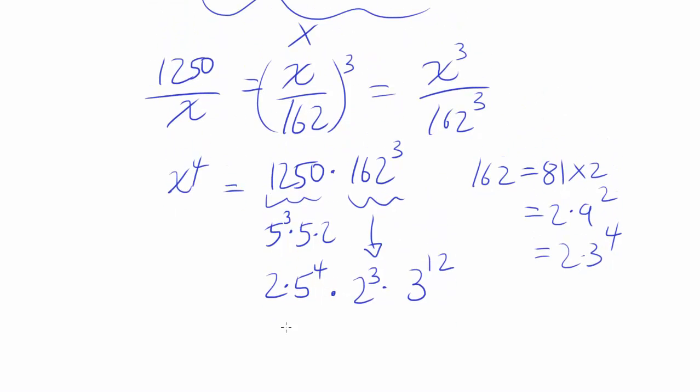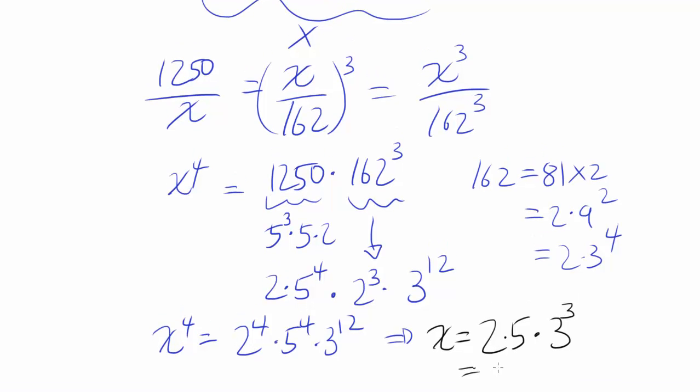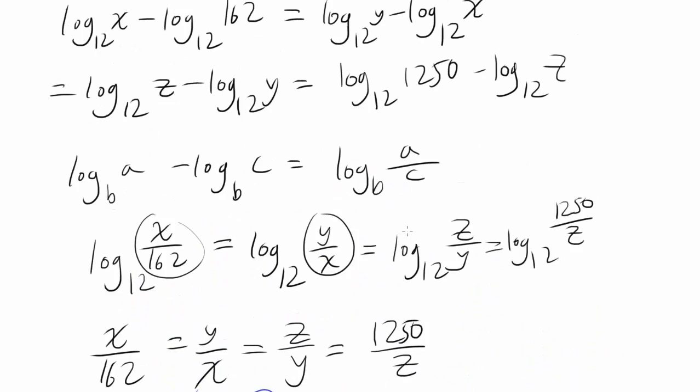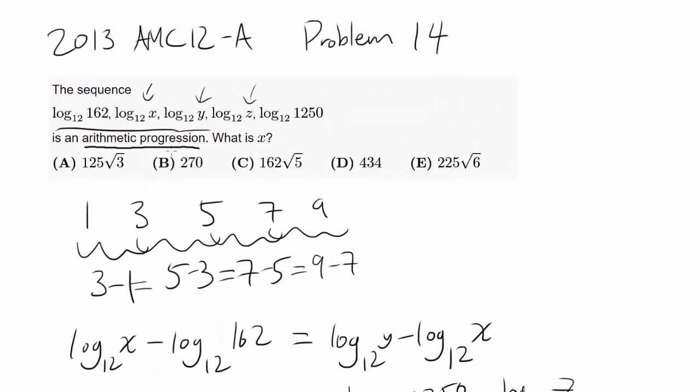So this simplifies to X to the fourth being equal to 2 to the fourth, 5 to the fourth, 3 to the twelfth. So what's X? Our value of X is going to be this raised to 1 fourth. 1 fourth of 4 is 1, so you have just 2, and same for 5. For 3 to the 12, 12 divided by 4 gets you 3. 2 times 5 is 10, 3 cubed is 27. So our value of X is 270. Let's go back up. Our value of X is 270, so the answer is B.